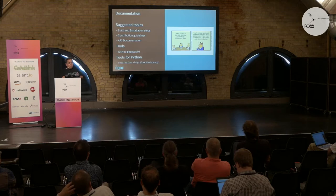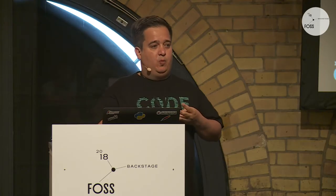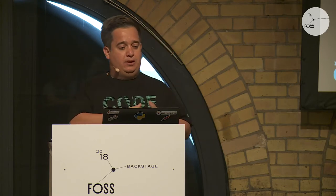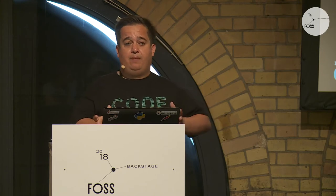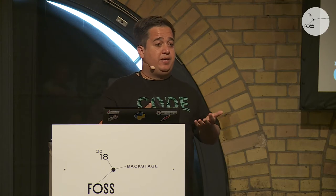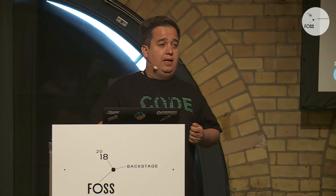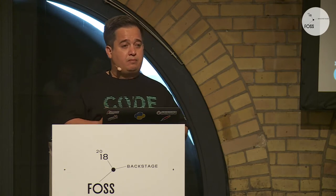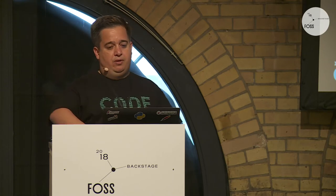In terms of documentation topics: include build and installation steps, contribution guidelines, and API documentation. For tooling, Apache has full infrastructure including websites. On GitHub you can use GitHub Pages with Jekyll and Markdown, or wikis linked to repositories. For Python libraries, Read the Docs is a good option. All these tools are free for open source public use.